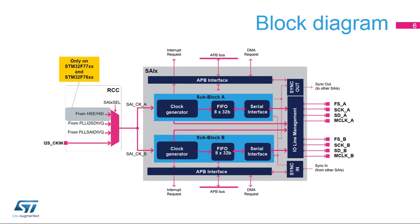Each sub-block can handle up to four IOs. For each sub-block, FS is the frame synchronization, SCK is the bit clock, SD is the serial data, and MCLK is the master clock.